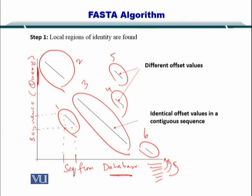Now, if you look at these number 4 and number 5 diagonals here and here, so they have different offset values. While, if you look at the diagonal number 3, it has very identical offset value and it is a contiguous, very long diagonal. And these are small diagonals.